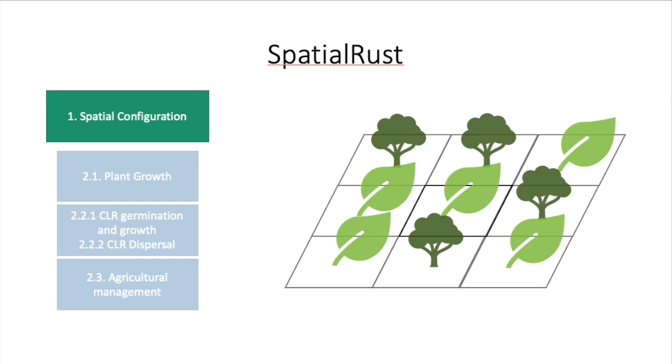So here is a conceptual description of the model. The farm is represented as a square grid, which is populated by shade trees and coffee plants. The proportion of shade trees and the spatial placement of these trees is decided at the beginning of the simulation.